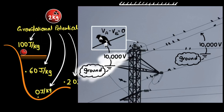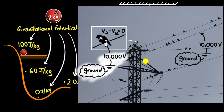Since both points inside the bird are at the same potential, the potential difference between them is zero, and therefore no charges flow from one point to another. This is similar to a ramp held horizontally — both ends are at 100 joules per kilogram, so there is no potential difference and the ball does not roll. The ball only rolls if there is a potential difference. Similarly, if there is no potential difference in the bird's body, charges will not flow.